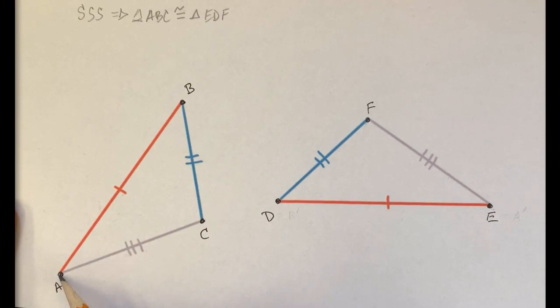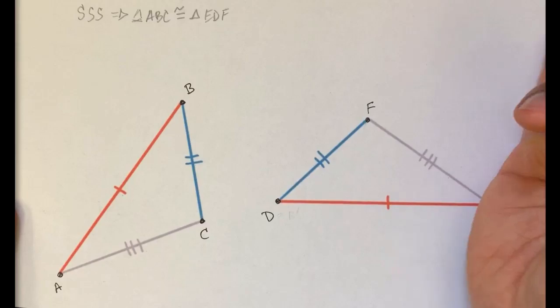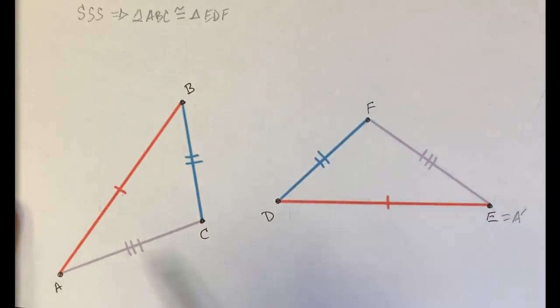You would translate point A, you would translate this entire left triangle so that point A coincides with point E, and then side AB would be moving in this direction over here, and then you would rotate around this point right over here, you could call that A prime. You rotate around that so that side AB coincides with side ED, and we've talked about that in other videos.